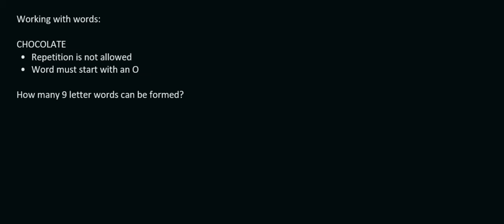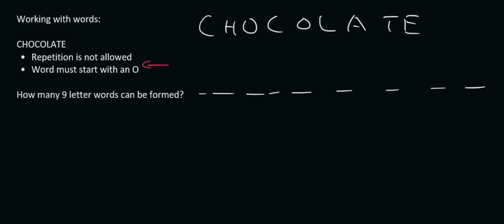Now here's where it gets interesting. For this one, the word must start with an O. Okay, so let me just quickly write down chocolate again. So we're going to start with an O. Now, the way it works is, if they're busy with a word question like this, and they ask you to start with a letter, just put a 1 for that letter. Okay, so we've chosen that. That's done.